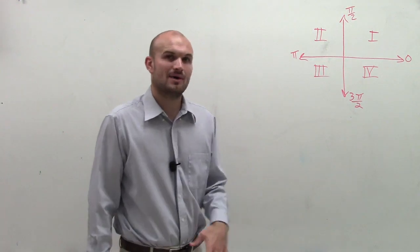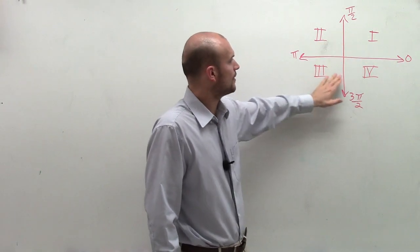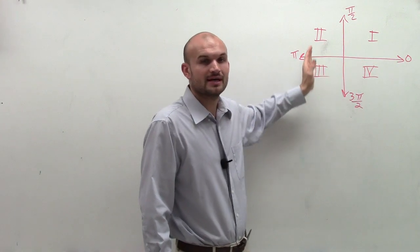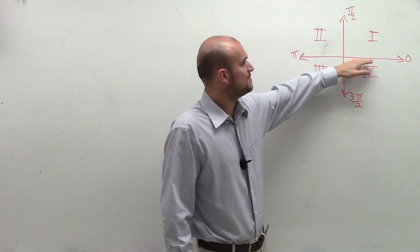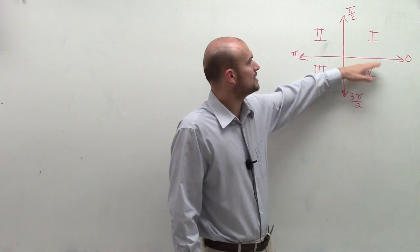Well, we still have our x and y-axes. But now what we're going to do is we're actually going to give these measurements in dealing with trigonometry, where we're actually going to have measurements from our initial side. So the measurement from our initial side is going to be π over 2.